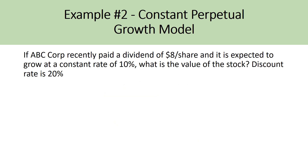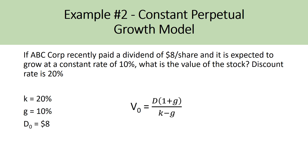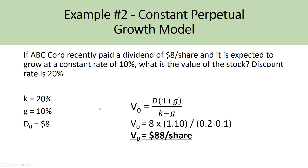Let's take a look at an example. If ABC Corp recently paid a dividend of $8 a share and it is expected to grow at a constant rate of 10%, what is the value of the stock given a discount rate of 20%? K is 20%, the growth rate G is 10%, and D, the base year dividend, is $8 a share. We input these values into the formula: 8 times 1.1, divided by 0.2 minus 0.10, to get a present value of $88 a share. As long as you identify the numbers and variables provided in the question, using the formula is very simple.